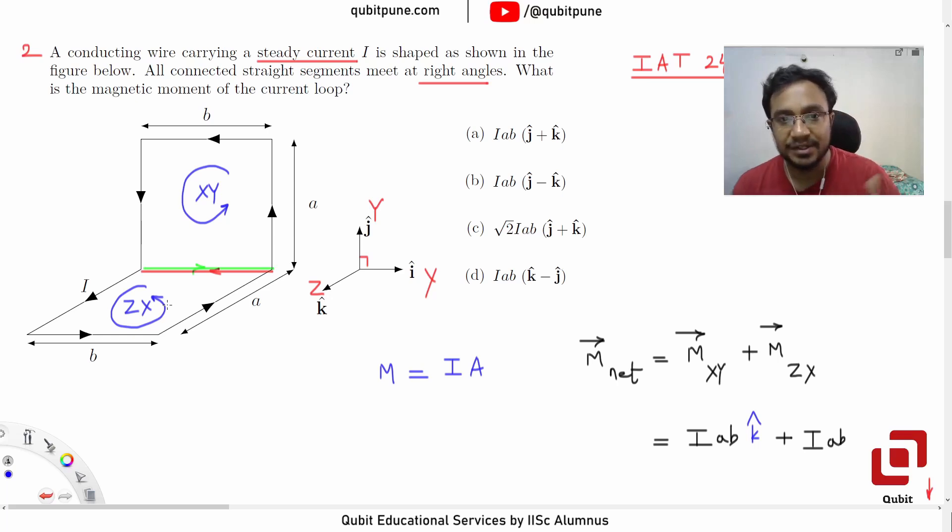So the thumb is pointing upwards. Upwards is J, and that gives us the answer as option A.